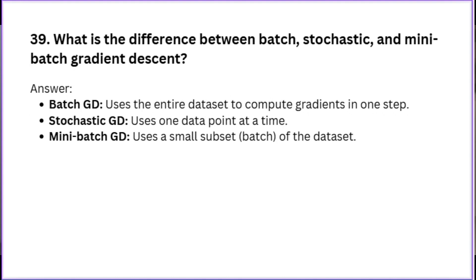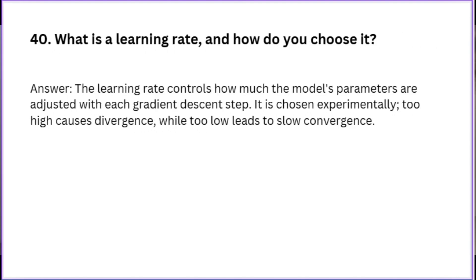What is the difference between batch, stochastic, and mini-batch gradient descent? What is a learning rate and how do you choose it?